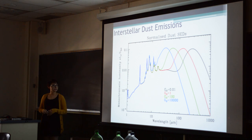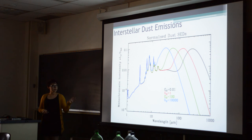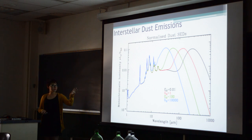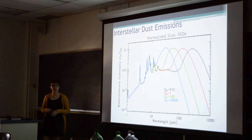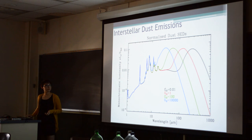You can see in this model that they're varying the radiation density, and that changes the large dust grain emissions, but it doesn't really have an effect on the small dust grain emissions. I'll go over that again later.